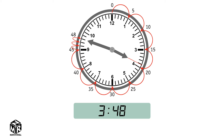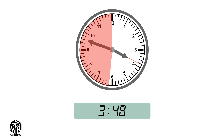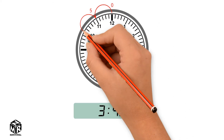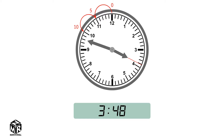When a clock shows 31 or more minutes after the hour, we can read the time as minutes before the next hour. 48 is greater than 30, so let's count by 5s from 12 to where the minute hand is pointing. Now let's count by 1s to where the arrow points. We get 12, so it's 12 minutes before 4.